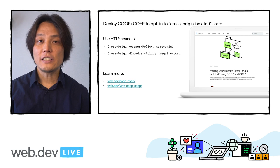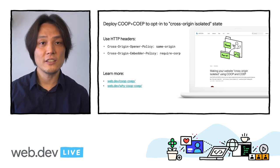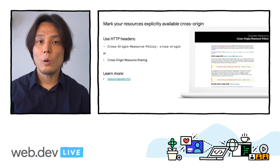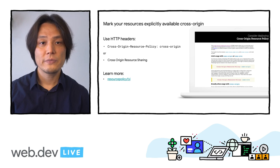Let's recap. Start testing with COOP and COEP and opt into cross-origin isolation today. You can learn how they work and why they are needed in more detail at web.dev/coop-coep and web.dev/why-coop-coep. If you're an owner of a CDN or provider of ads, fonts, images, or other resources, please start adopting Cross-Origin-Resource-Policy. You can learn more at resourcepolicy.fyi. Additionally, Sam is covering this topic showing how DevTools can help you with a variety of issues and features, which includes new functionality for COOP and COEP. Thank you for watching.